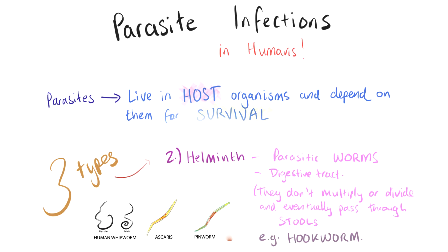Helminths are a second type of parasite which affect humans. They are known as parasitic worms and they often reside in a person's digestive tract. Even though they can't multiply or divide, they can cause severe symptoms. Eventually they pass through a person's stool. An example of a helminth is the hookworm parasite.